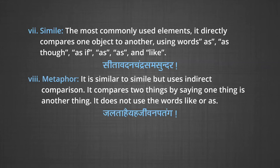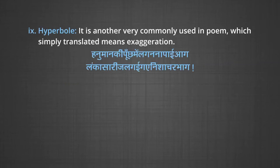Then another element is metaphor — it is similar to simile but uses indirect comparison. It compares two things by saying one thing is another thing. It does not use the words 'like' or 'as.' For example: 'jalta hai yah jeevan patang.' Hyperbole — it is another very commonly used element in poems, which simply means exaggeration. For example: 'Hanuman ki pooch mein lag ne paai aag, Lanka saari jal gayi, gaye nishchar bhaag.'